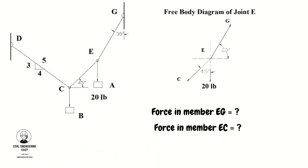We will use two conditions of the equilibrium equation. The first is that the summation of all horizontal forces acting on the joint is equal to zero. The second equilibrium equation is that the algebraic summation of all the vertical forces acting along the y-axis must also be equal to zero.